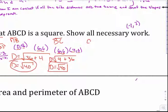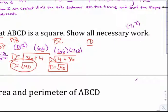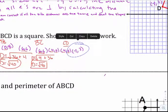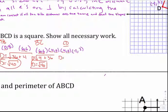Next one, CD. C was at (4, 0) and D is at (-2, 2). The x's go from 4 to negative 2, that's a difference of 6 — square it, you get 36. The y's go from 0 to 2, a difference of 2 — square it, you get 4. So that's also the square root of 40.